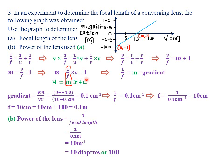So 1/F equals the gradient of the graph, where y = mx + c and m is the gradient. To find the focal length, we must first find the gradient of the given graph. Gradient is change in y over change in x — here, change in magnification M over change in image distance V.